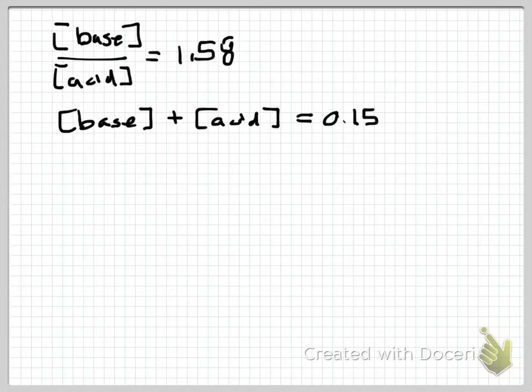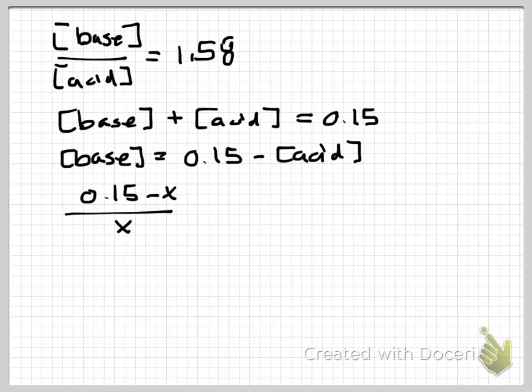So setting my base concentration equal to 0.15 minus my acid concentration, and then solving the relationship: 0.15, I'm just going to call this x at this point, divided by x equals 1.58.